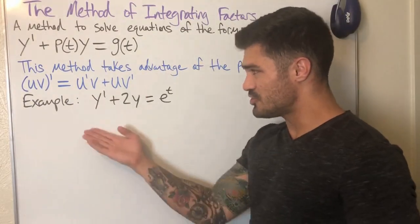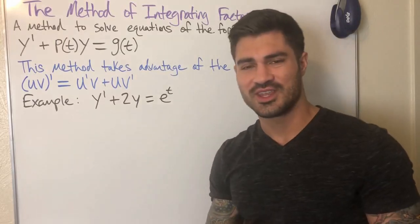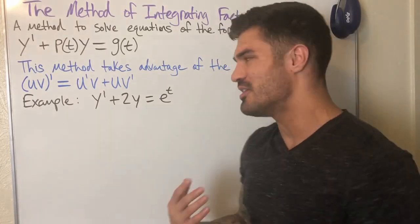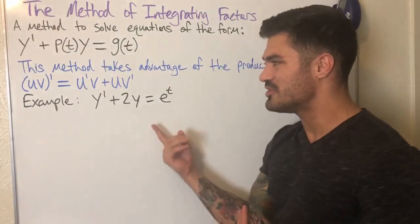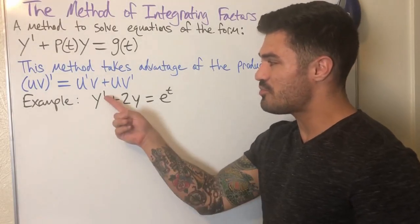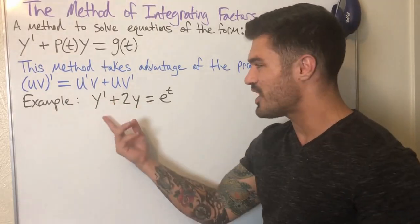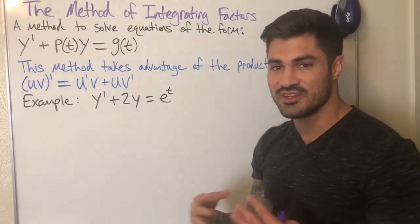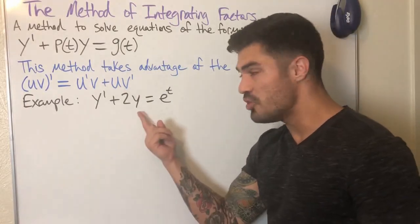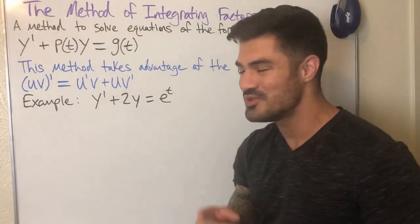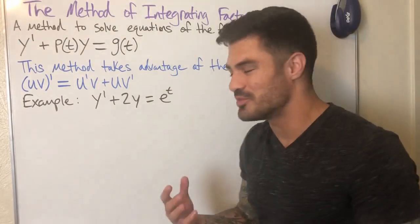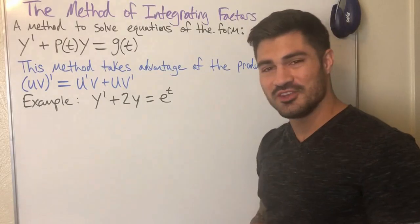When I was first shown this, I was thinking: why can't I just directly solve this — integrate both sides? The y prime can become a y via the fundamental theorem of calculus, and e to the t is fine, but the 2y term is the problem. Because y is a function of t, you can't just write that as y squared over two — we don't know what y is or how to integrate it. That's the issue.